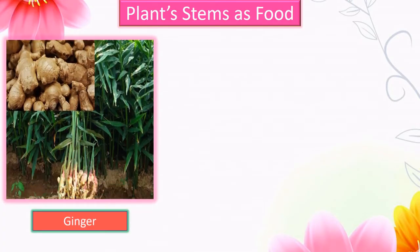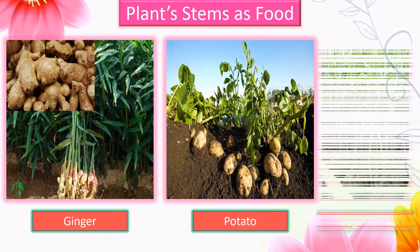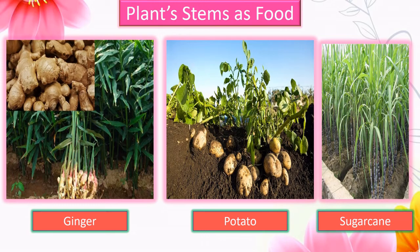Now let us see how stems are used as food. Ginger, potato, and sugar cane are all stem parts of the plant.